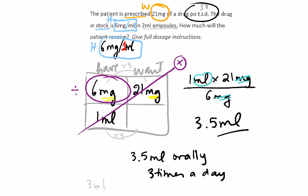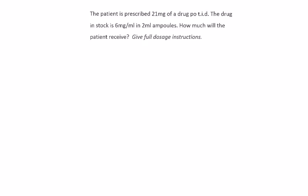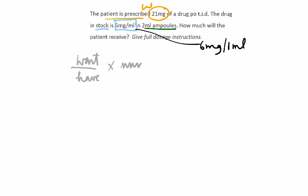Let's say now the same question, if we wanted to solve this using the formula method. We would write our formula, want over have, multiplied by the third quantity, which could be the volume or the tablets. Same as before, 21 milligrams is what the patient has been prescribed. So that's our want. And the concentration of the drug, the drug in stock, six milligrams in two mils. Be careful not to stretch this box too much and end up using the two mils. The two mils is just the size of the ampoules. So that's six milligrams. We always need to remember, six milligrams per mil means one invisible mil. It's just the number that is not written. It's just like when we talk about 80 kilometers per hour. 80 kilometers in each one hour.